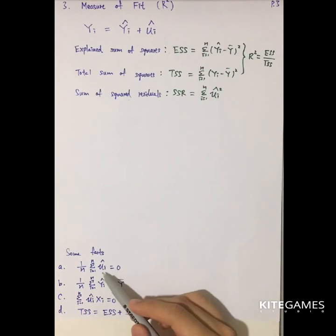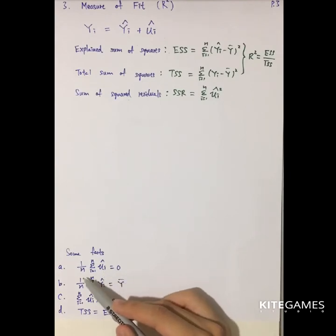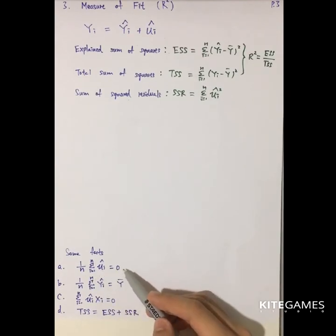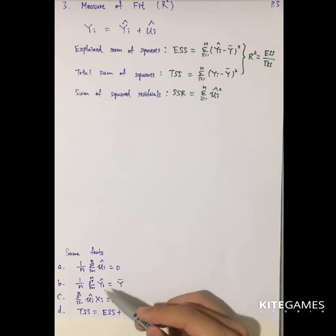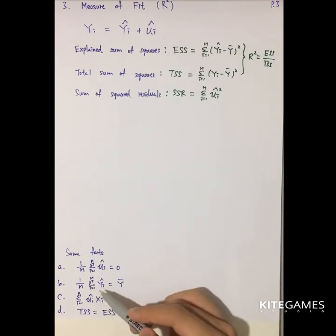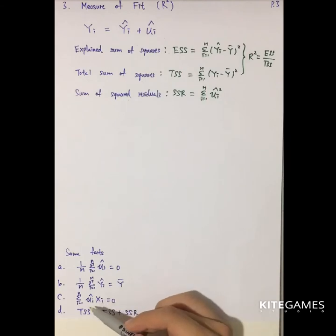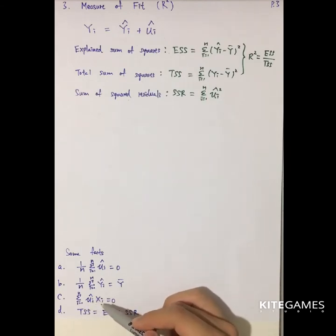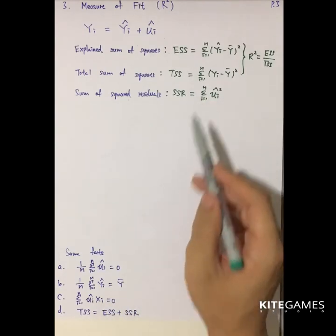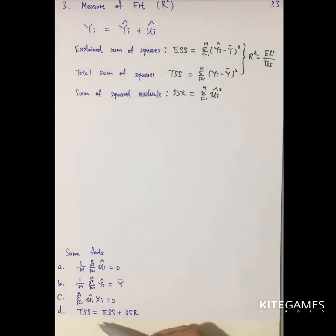We have three definitions. The first is the Explained Sum of Squares (ESS): the sum from i=1 to n of (yi hat minus y-bar) squared. The second is the Total Sum of Squares (TSS): the sum from i=1 to n of (yi minus y-bar) squared — the true population value minus the average, squared. Finally, the Sum of Squared Residuals (SSR): the sum from i=1 to n of ui hat squared. With these three definitions, we can derive that R-squared equals ESS divided by TSS. The bigger the R-squared, the more variation is explained by the ESS, and the better the OLS equation explains the population.